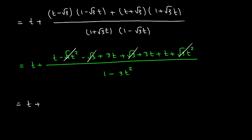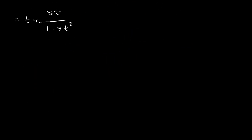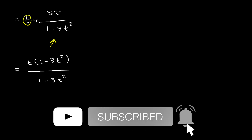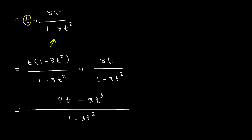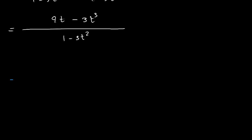So we have t plus 8t all over 1 minus 3t². Now let's multiply both top and bottom to get a common denominator, giving us t times (1 minus 3t²) over (1 minus 3t²), combined with the previous expression. Simplifying, we get 9t minus 3t³ on the top and 1 minus 3t² on the bottom. Factoring out 3 from the numerator gives 3 times (3t minus t³) over (1 minus 3t²).